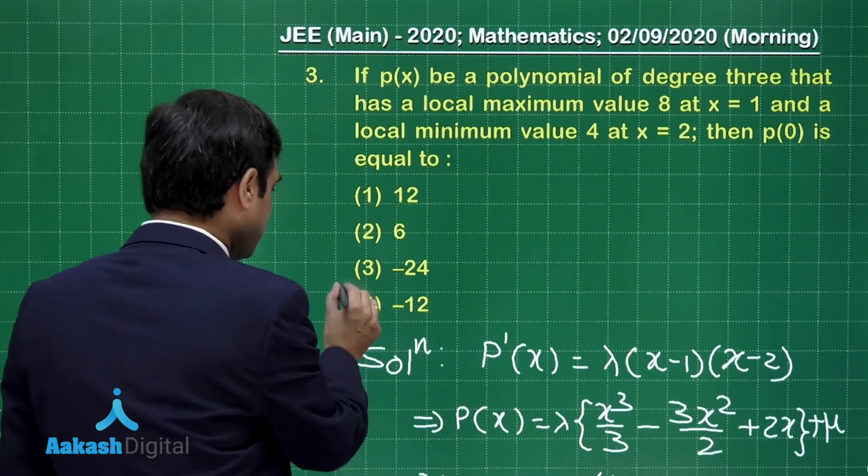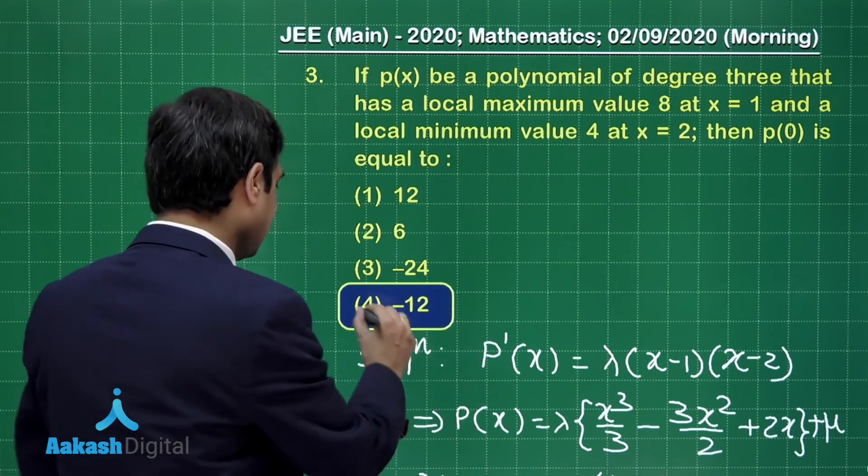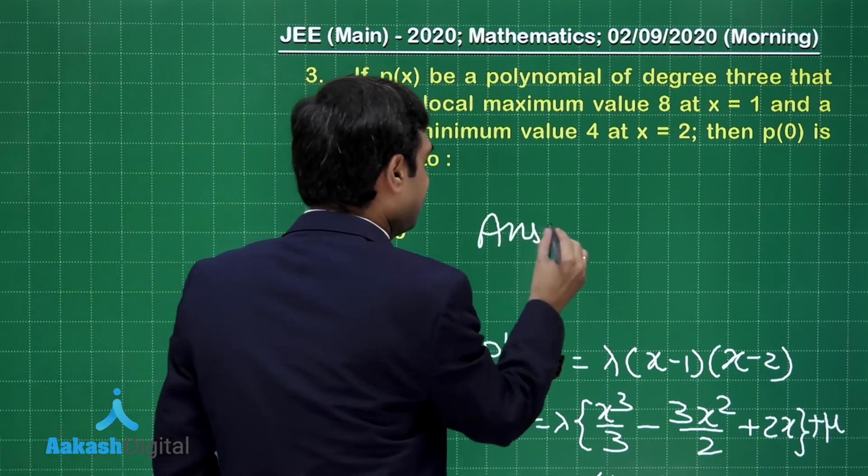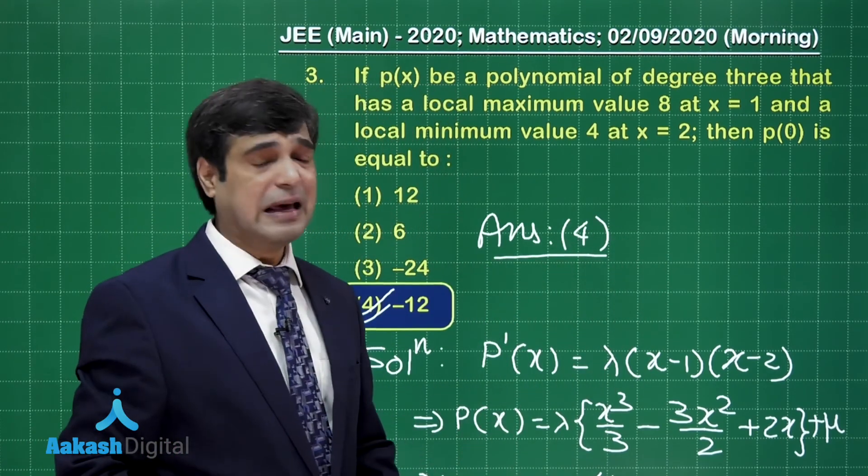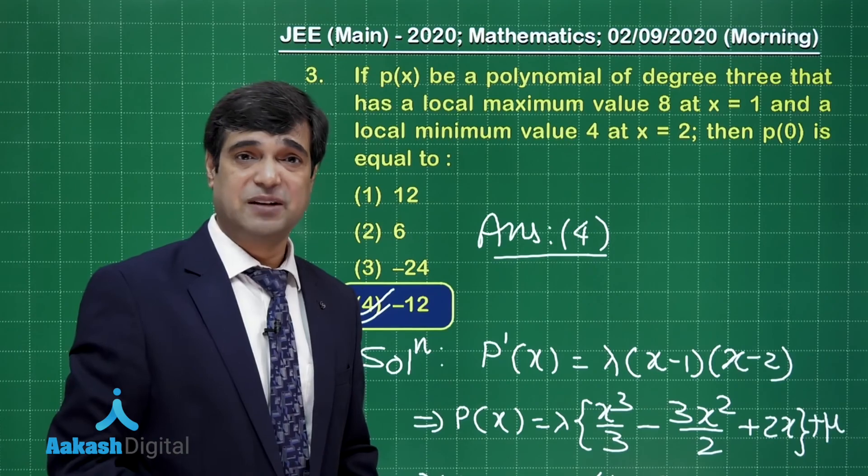What we are looking for is p(0), that is substitute x = 0 in this polynomial. Just simplify and calculate. We get p(0) = μ = -12. Yes, the correct answer for this question is option number 4. Let's move on to the next one, question number 4.